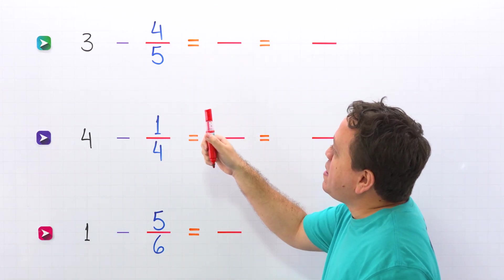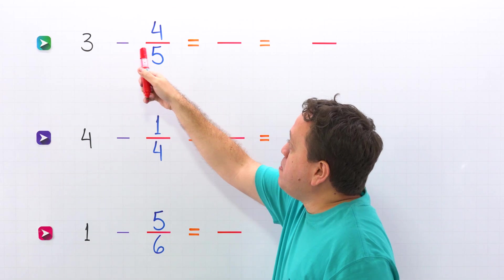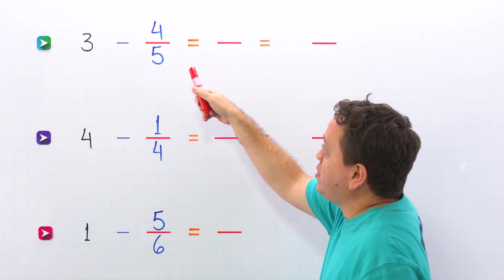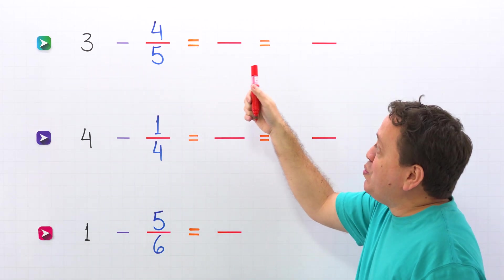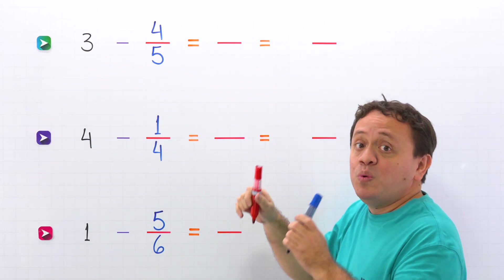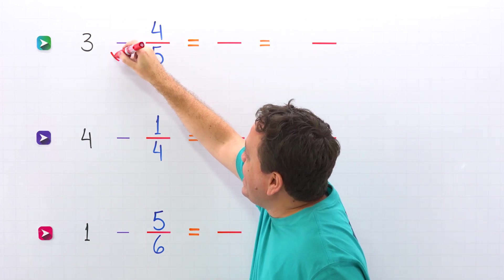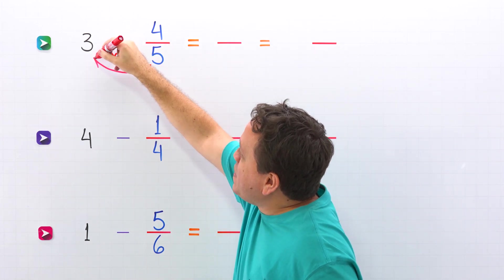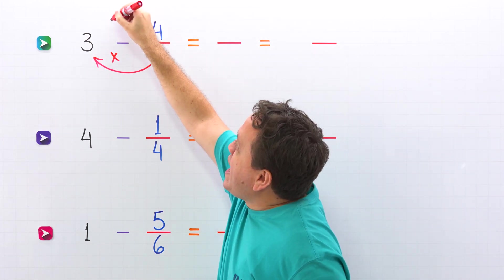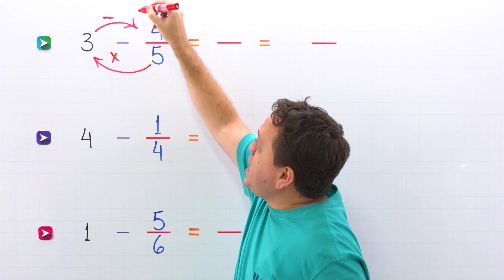In this example, we're going to subtract 3 minus 4 fifths. We have a whole number and a fraction. To find the difference, we start by multiplying the denominator by the whole number, and then we subtract the numerator.